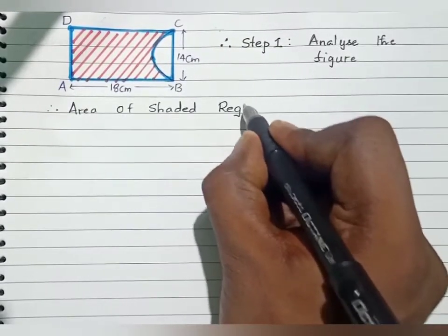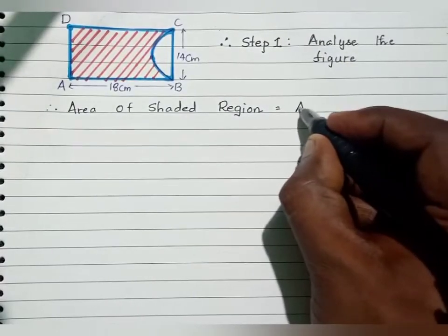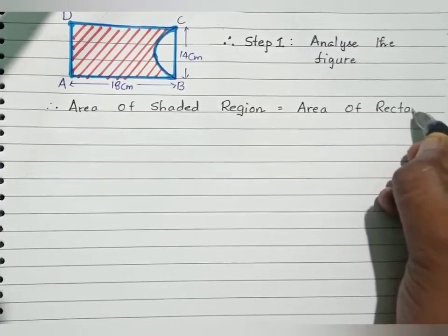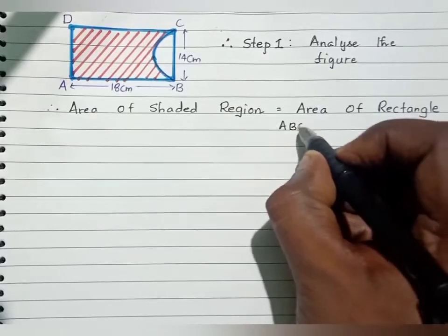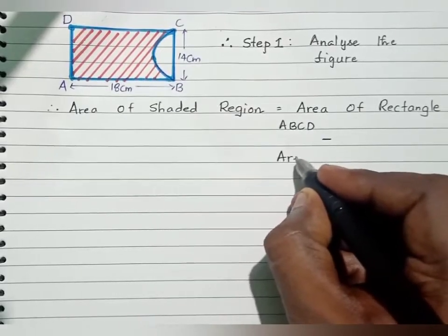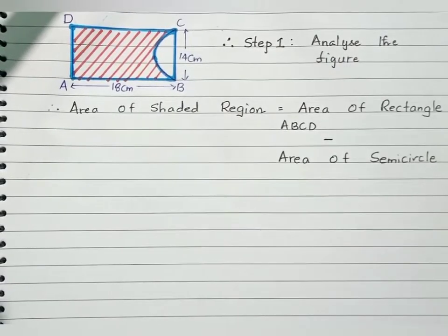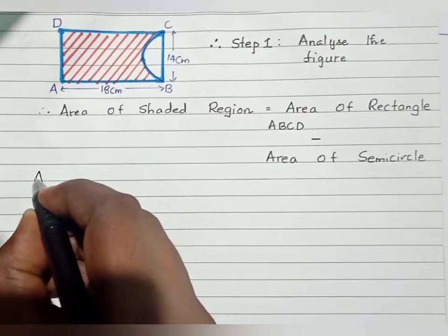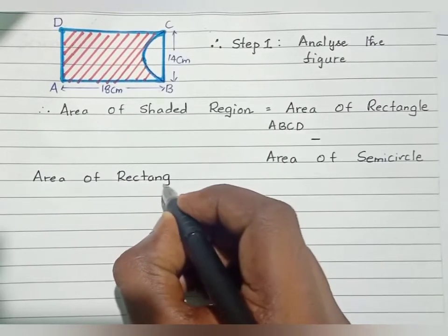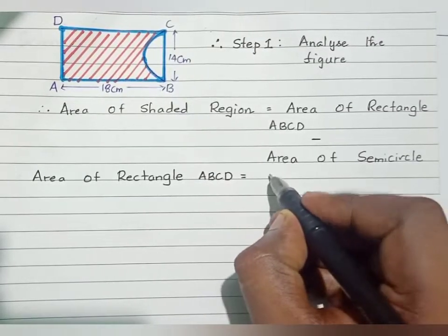Area of shaded region equals area of rectangle ABCD minus area of semicircle. Area of rectangle is length into breadth, whereas area of semicircle is half into area of circle, that is pi r square. Now area of rectangle equals length into breadth, so length equals 18 centimeter and breadth equals 14 centimeter.